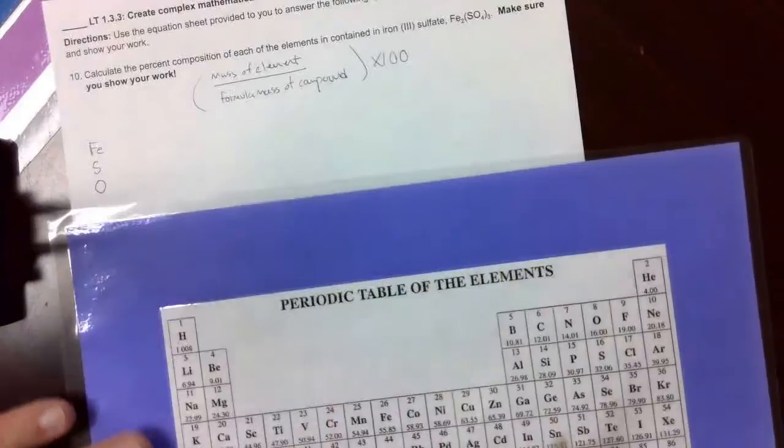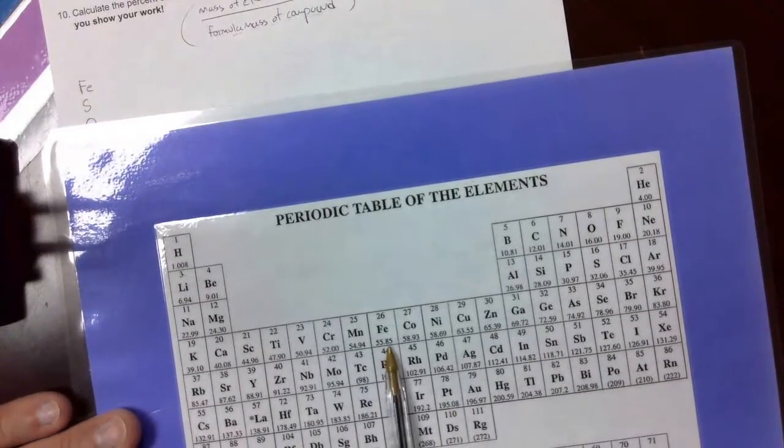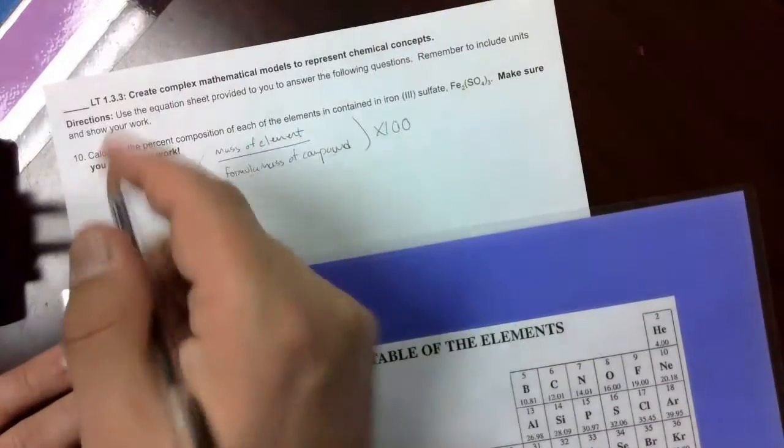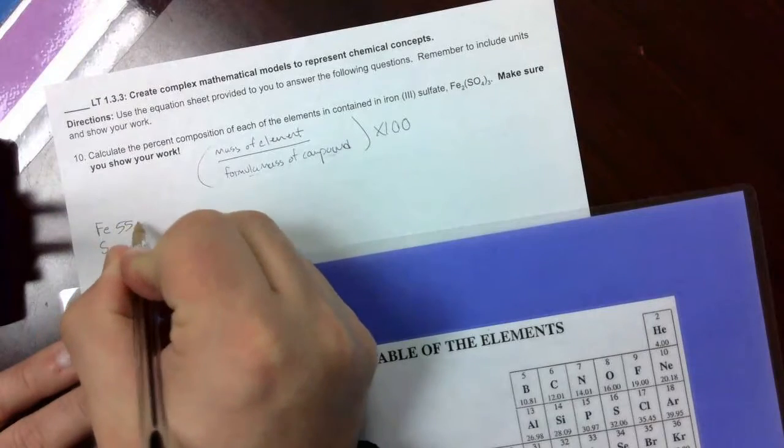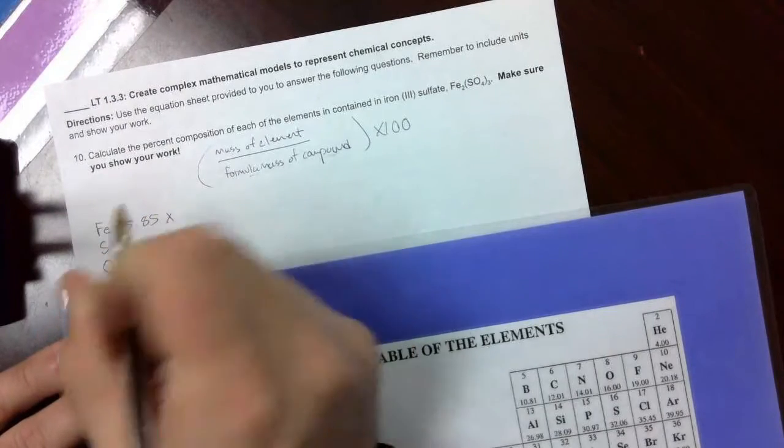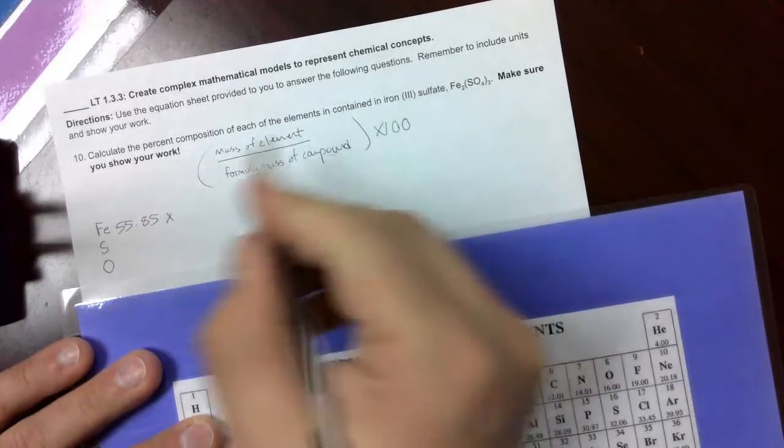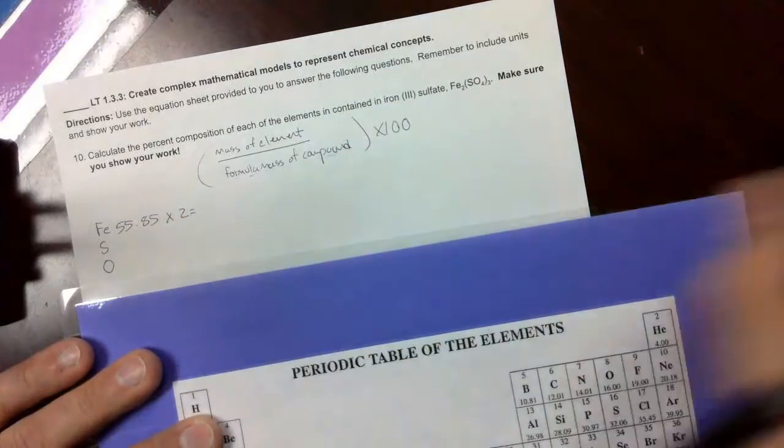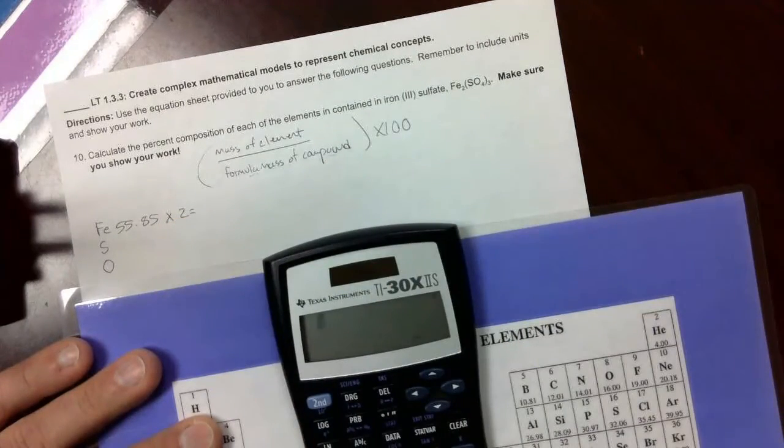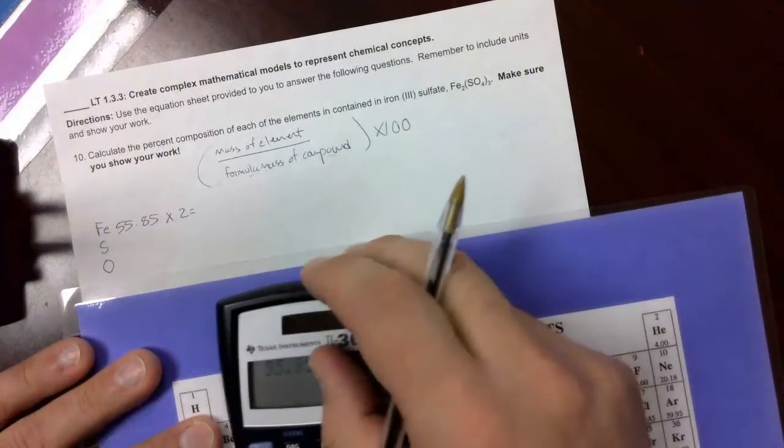Now we'll look up those masses on the periodic table. Iron is right here in the middle, 55.85. Multiply that by the subscript on iron, which is 2. Use our calculator to do the math. We get 111.7.